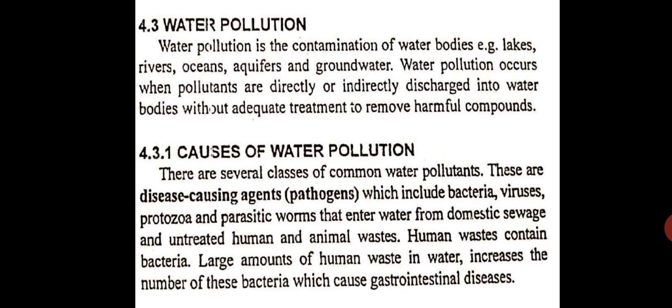What are the causes of water pollution? There are several categories of common water pollutants. The first are pathogens, which include bacteria, viruses, protozoa, and parasitic worms that enter water from domestic sewage and untreated human and animal waste. If this human or animal excreta directly goes into the water, it causes disease — there is a bacterium called E. coli.